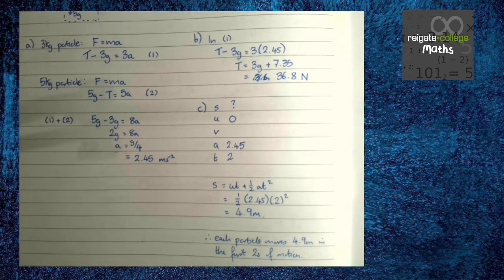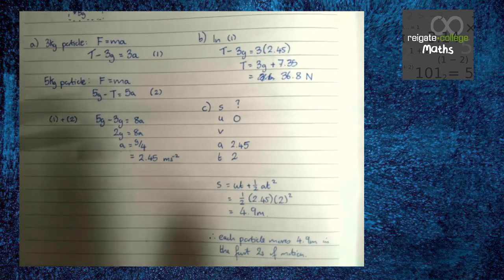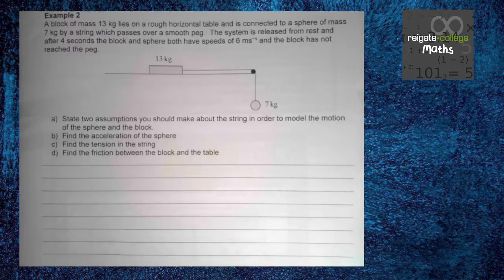So, essentially, every pulley question works broadly in this way. Looking at each particle separately, doing f equals ma, and then simultaneous equations. Now, just because these two are both moving vertically, doesn't mean that this is the way to do that, and there's a different method for any other question. In example 2 that we're going to look at in a moment, you'll see what I mean. So we can see here we have a block of mass 13 kilograms on a rough horizontal table, connected to a sphere of mass 7 kilograms by a string which passes over a smooth peg. The system is released from rest.